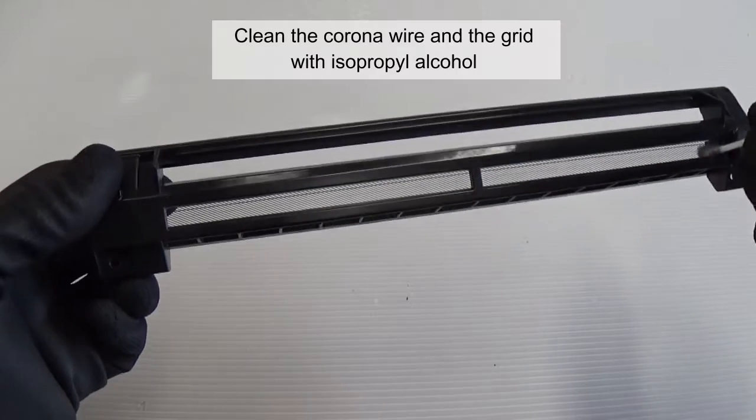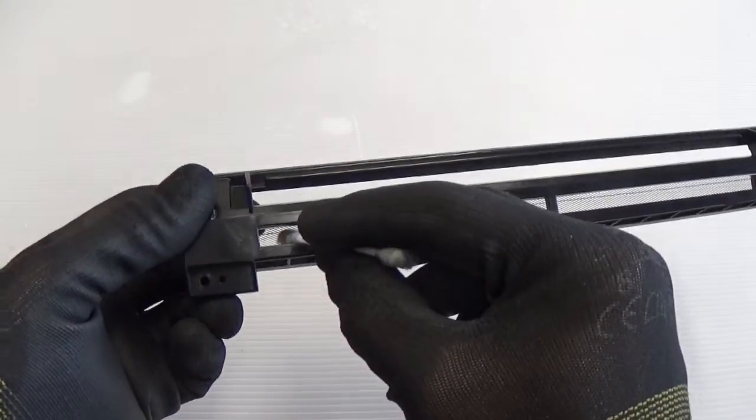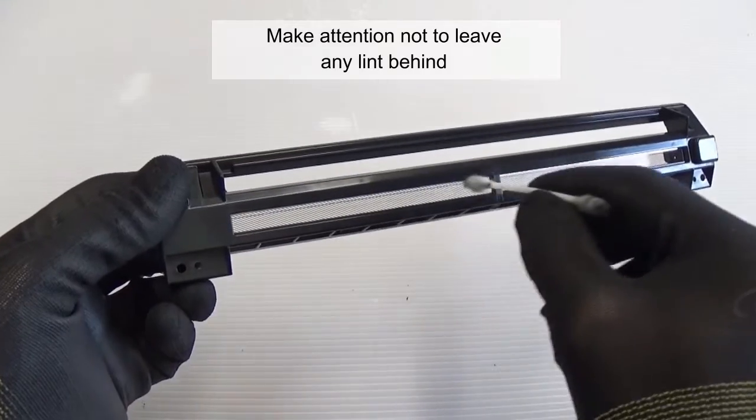Clean the corona wire and the grid with isopropyl alcohol. Make attention not to leave any lint behind.